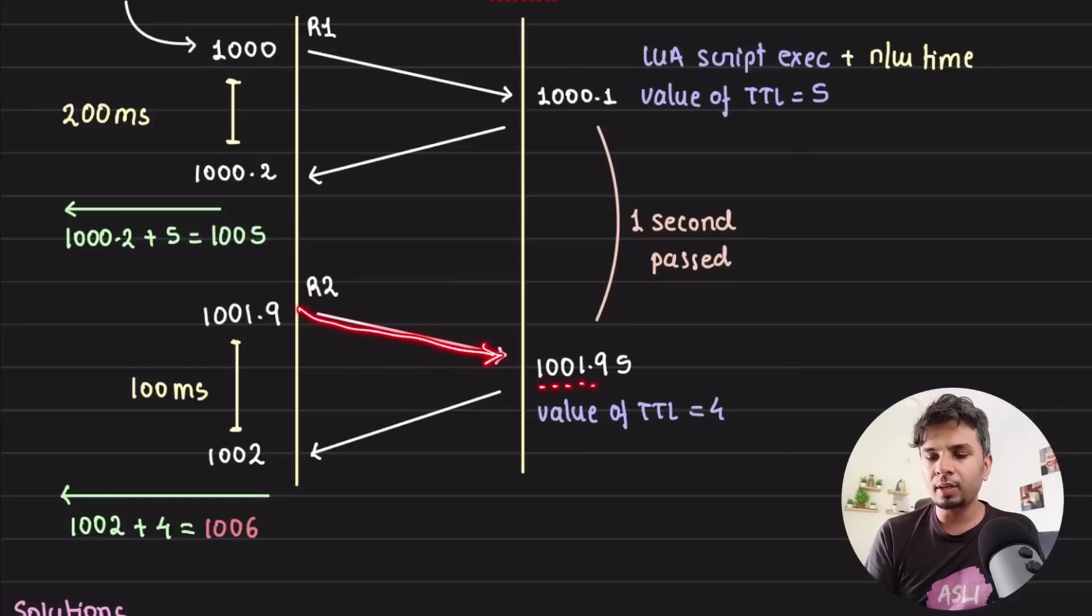So at that time, at that very time, what would be the value? So it reached over here at 1001.95—that's the time at which you are getting the TTL value of that key. And because one second is passed, the value is four. And now when it reaches back, it would take another 50 milliseconds, so the timestamp on my API server is from 1001.9, it is now 1002.